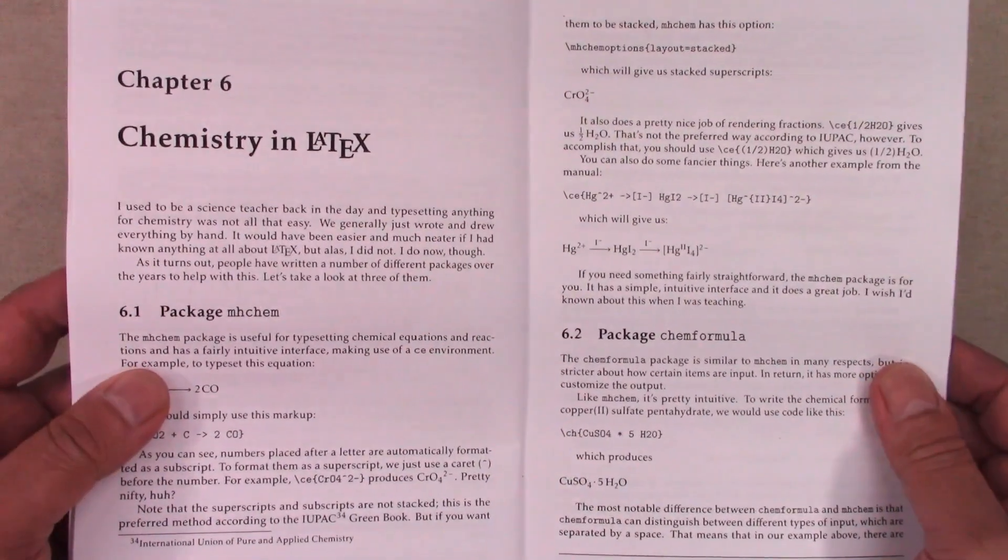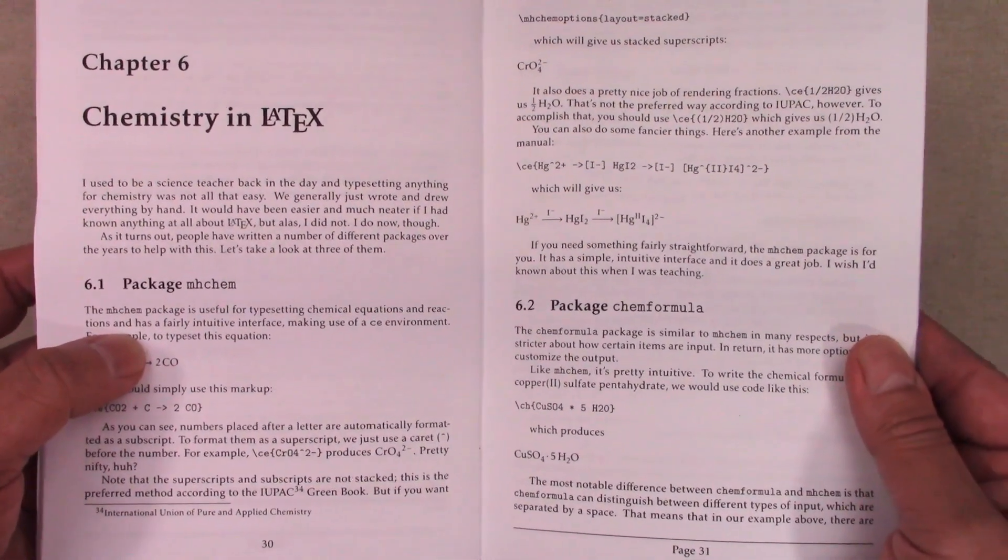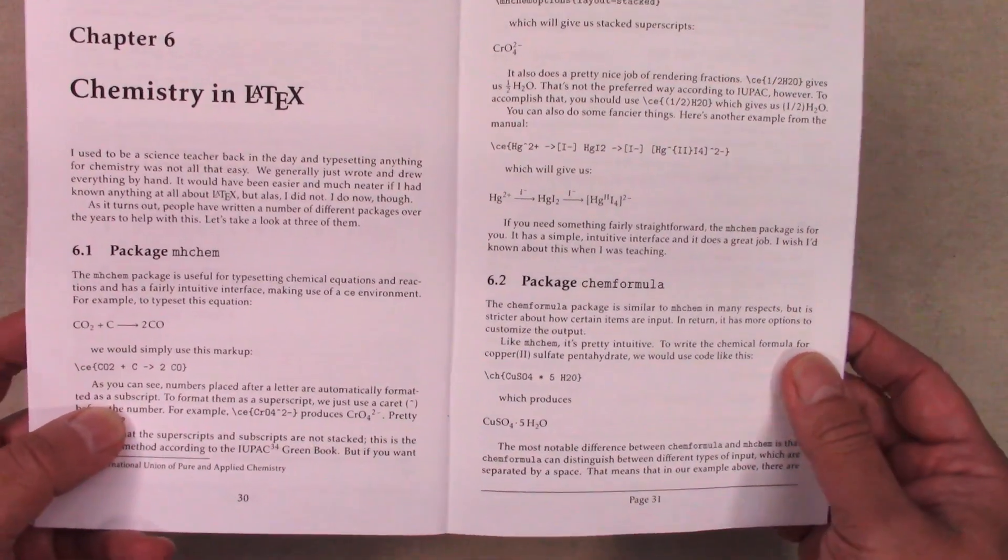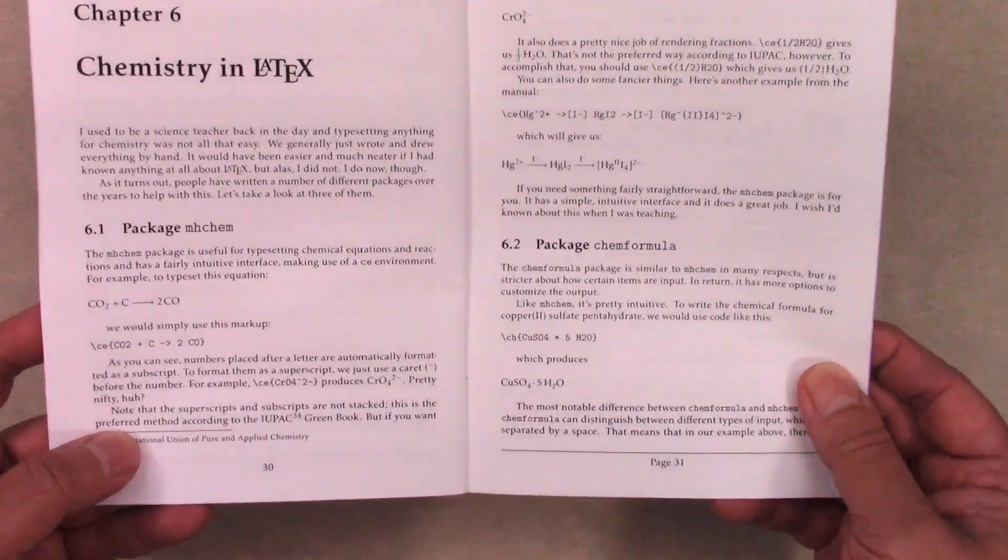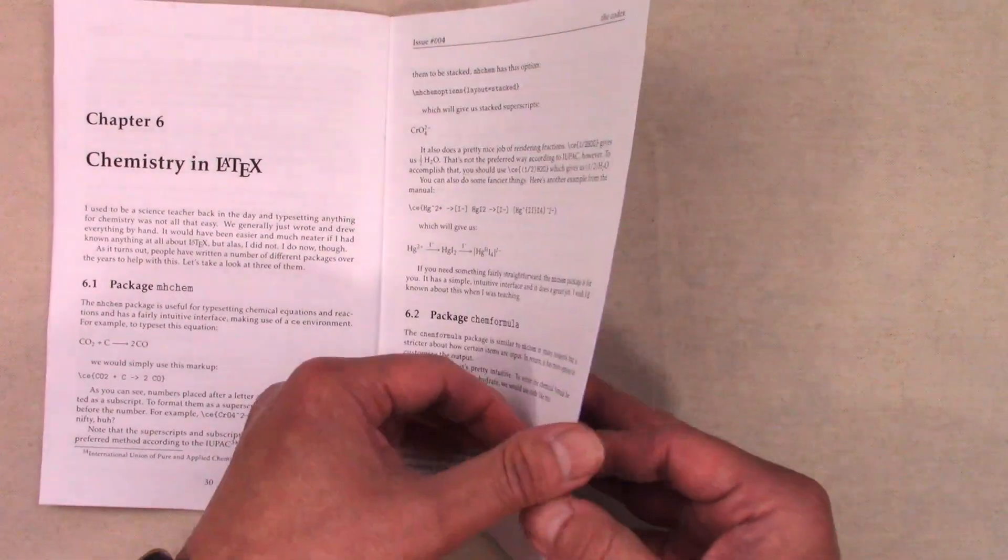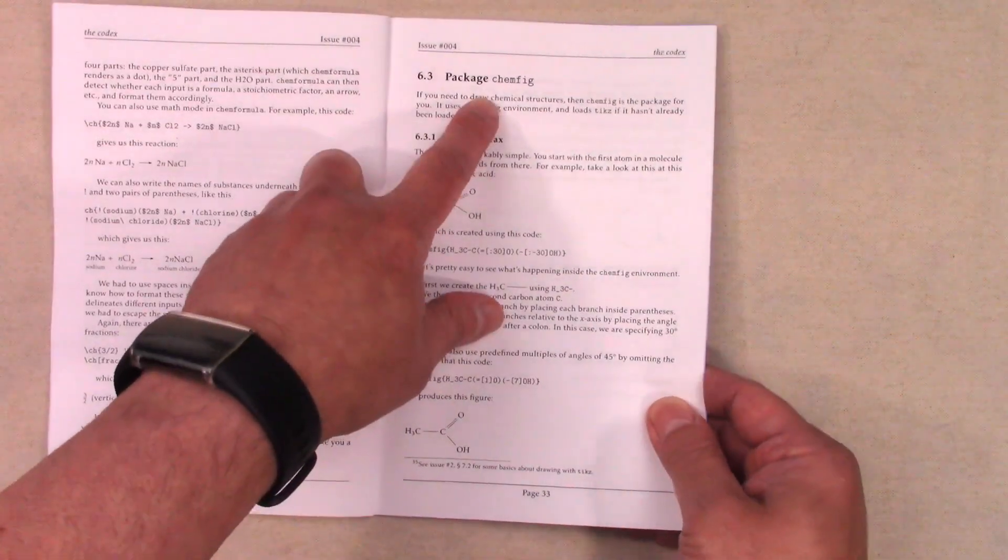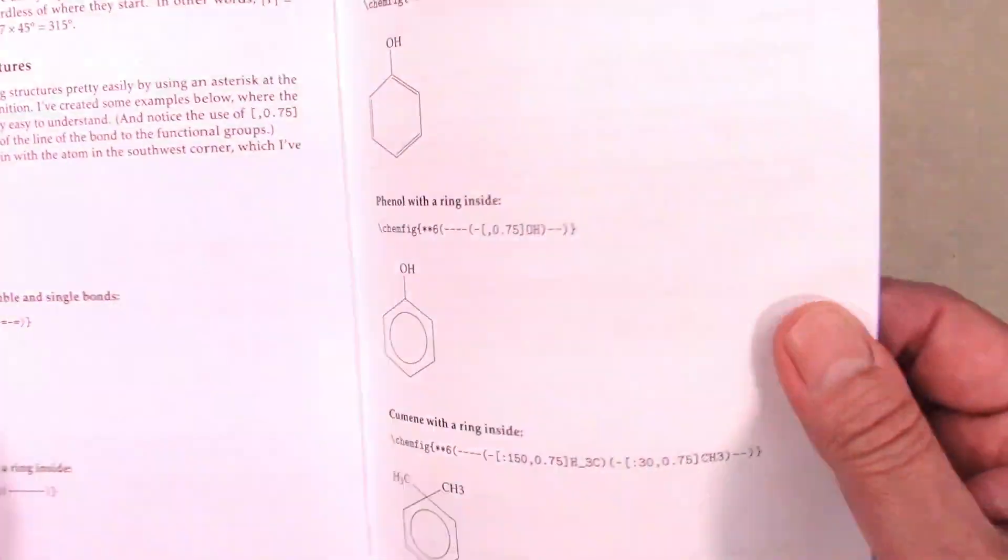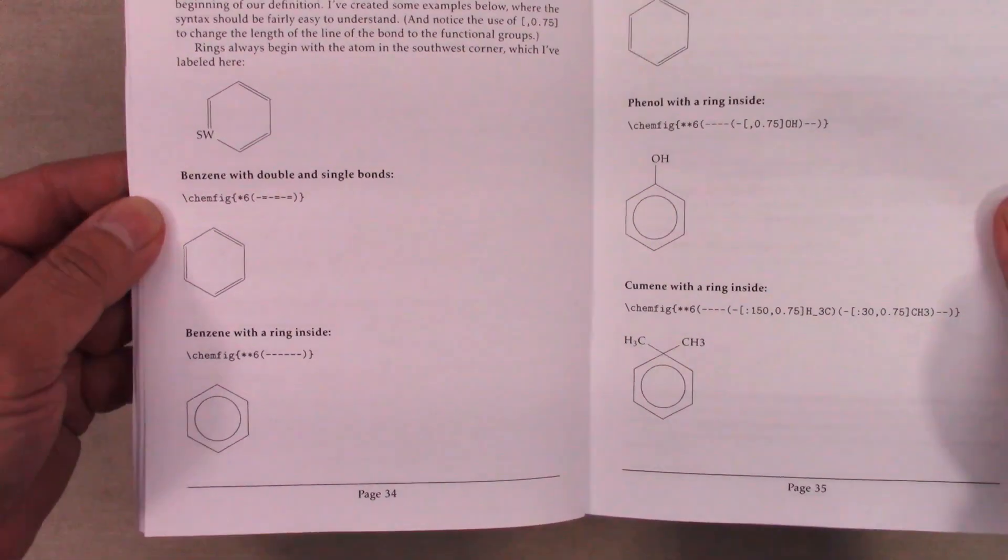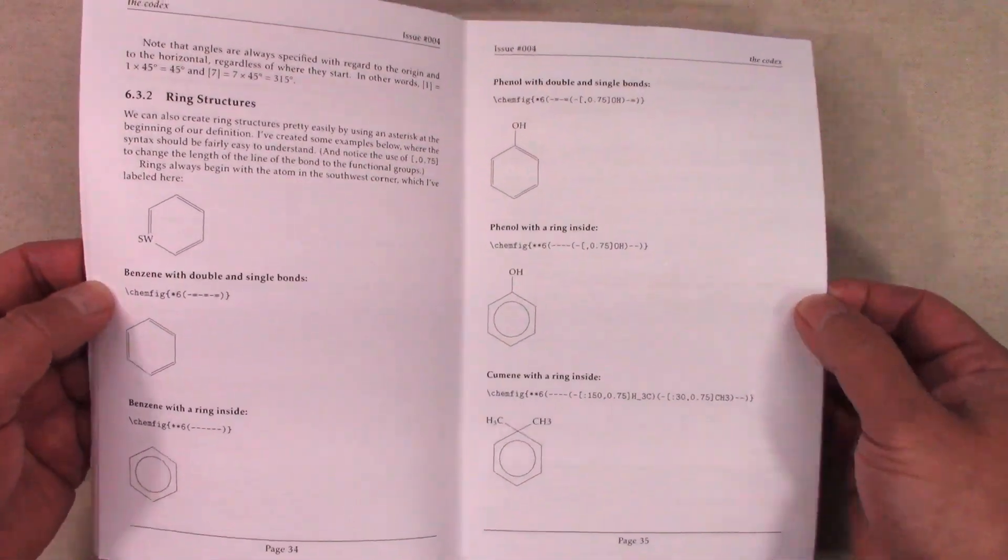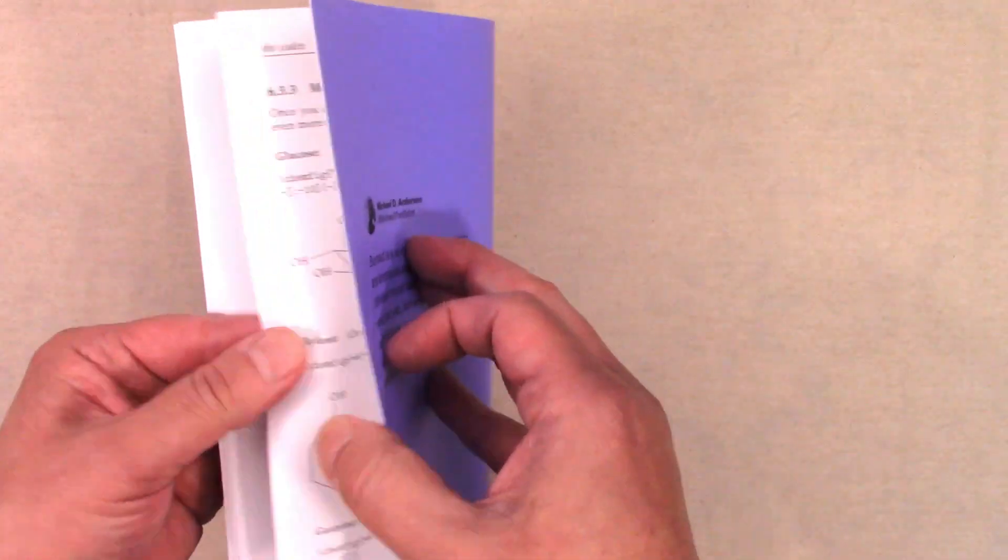Chemistry in LaTeX. I talk about three different packages to do chemistry typesetting which are actually pretty cool. It makes me excited about chemistry and that's not something you often hear people say. I talk about the MHChem package, the ChemFormula package, and the ChemFig package which lets you draw things like acetic acid but it also lets you create ring structures. Organic chemistry was my favorite form of chemistry so this makes me pretty happy.